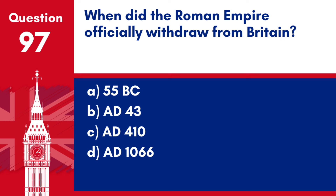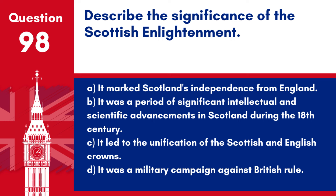Answer: c. AD 410. The traditional date when the Roman Empire is said to have formally withdrawn its military and administrative presence from the province of Britannia.